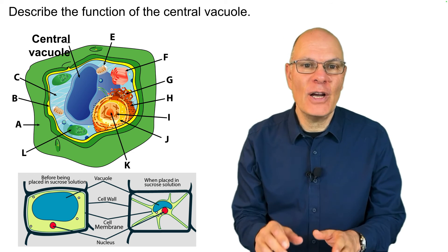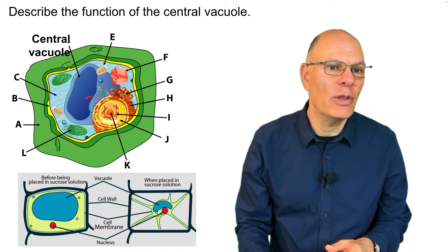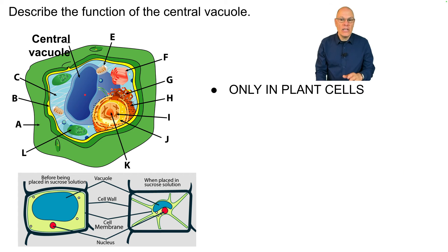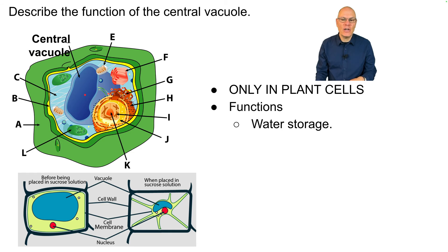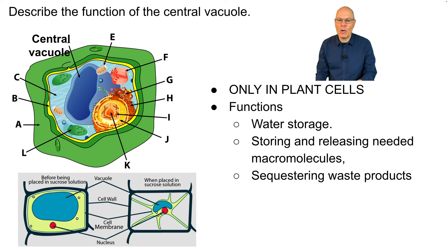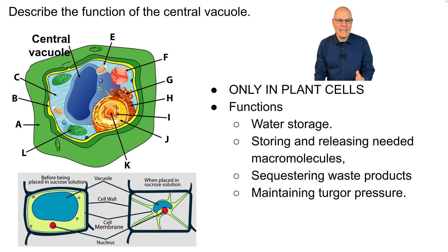The central vacuole is a large structure found only in plant cells. Its functions include water storage, storing and releasing macromolecules, sequestering waste products, and maintaining turgor pressure.